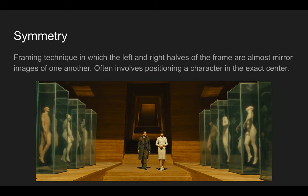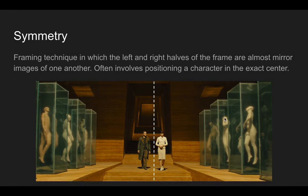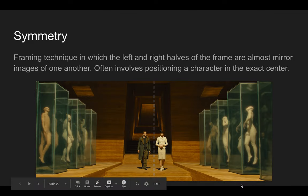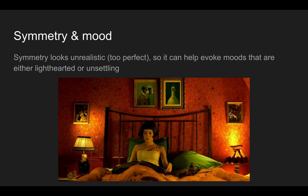The next term is symmetry — you probably know this from geometry, and the basic idea applies here. It's a framing technique that, if overused, can hurt a film — unless you're Wes Anderson or Stanley Kubrick. The idea is that if you draw a vertical line right down the middle of the frame, the left side would almost be a mirror image of the right. What you see on the left looks almost the same as what you see on the right. It's like balance, but multiplied. Symmetry often breaks the rule of thirds by placing objects of interest right in the center of the frame.